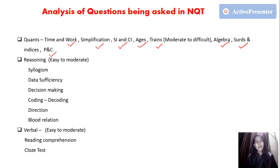According to the analysis, Quants in the NQT exam was moderate to difficult, Reasoning was easy to moderate, and Verbal was easy to moderate. In Reasoning, around 80% of questions are from syllogism, data sufficiency, and blood relations.